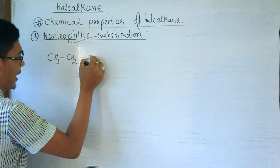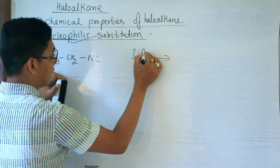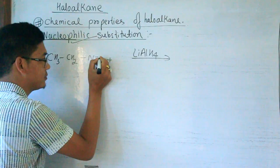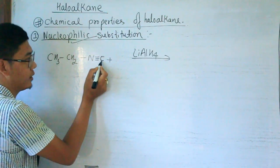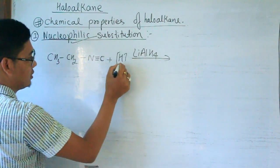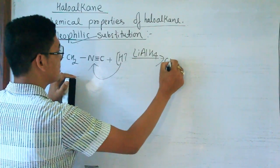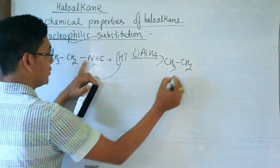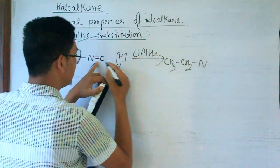So with AgCN, CH₃CH₂Cl gives ethyl isocyanide (CH₃CH₂NC). Ethyl isocyanide also has a triple bond (N≡C) and is unsaturated. We can reduce it using LiAlH₄. Counting valences: carbon valence is 4 and nitrogen valence is 3; after reduction the product is a saturated amine.